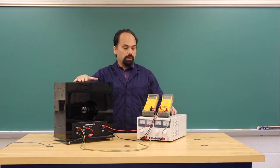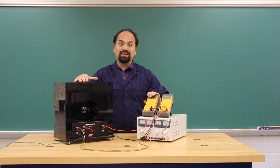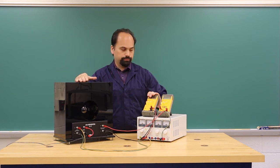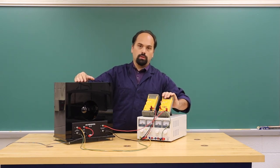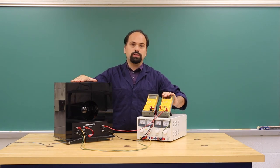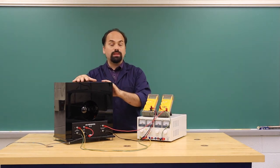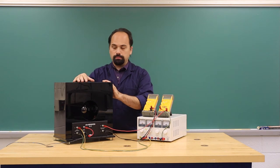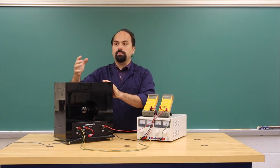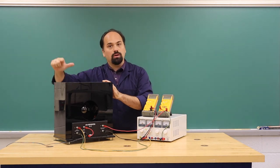You will be taking measurements of the accelerating voltage, which is effectively the velocity of the electron, the current going to the Helmholtz coils, which is proportional to the strength of the magnetic field, and the diameter of the ring that is the path of the electrons.